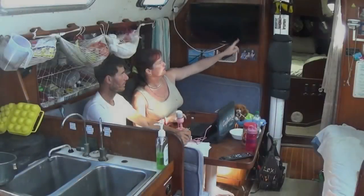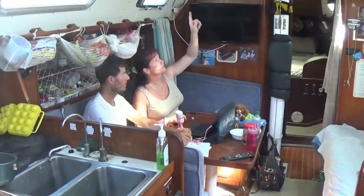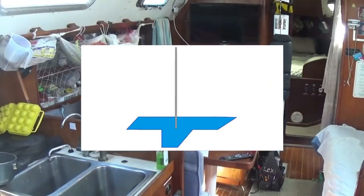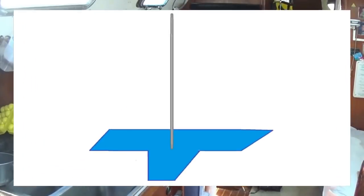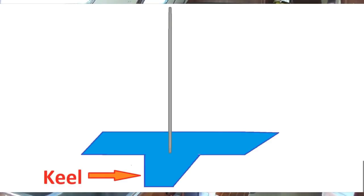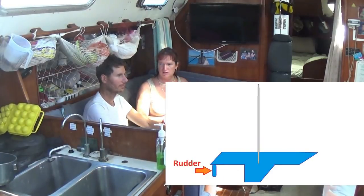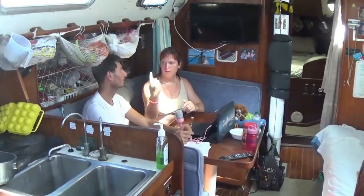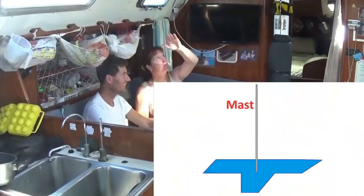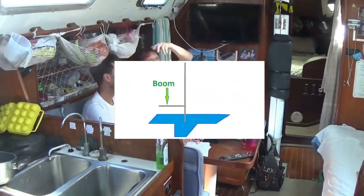On a sailboat, we need to be able to communicate using the technical language about the different parts of the sailboat. What is the main body of the boat called? It's a hull. And what do we call the big heavy weight down below? Keel. And the steering stick in the back in the water? It's a rudder. We have a big stick going up into the sky? That's a mast. And there's a stick pointing towards the back? It's a boom.